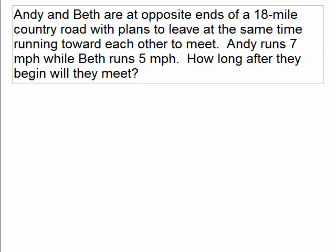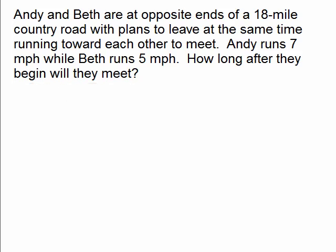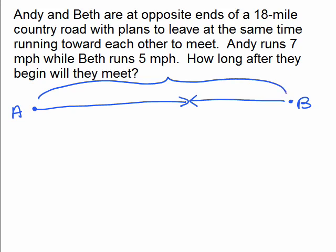There's yet another one. Andy and Beth are at opposite ends of an 18-mile country road, plans to leave at the same time running toward each other to meet. Andy runs seven miles per hour, while Beth runs five miles per hour. How long after they begin will they meet? Well, they're away from each other, right? They're apart from each other, and they start running toward each other, and eventually they meet. Let's say that's Andy, going a little bit faster than Beth, and I know that this total distance is going to be 18 miles. If we knew how long this line segment was and how long this one was, we know we would add them together to get 18.